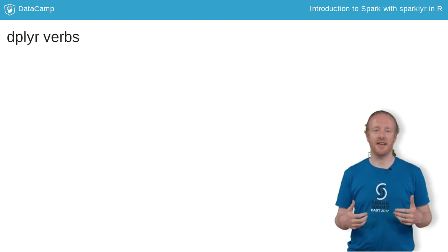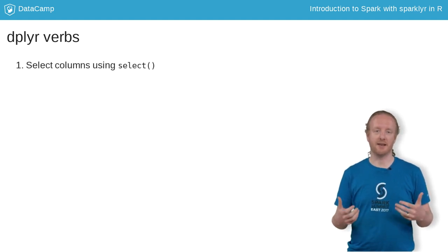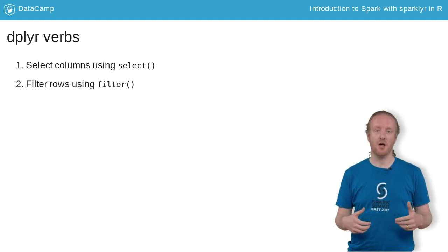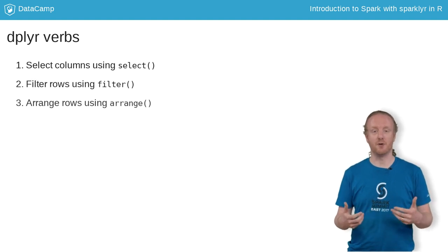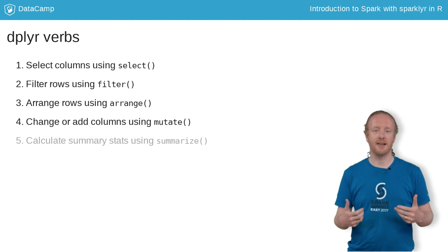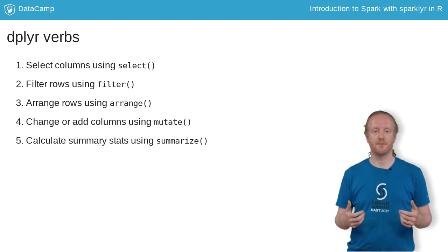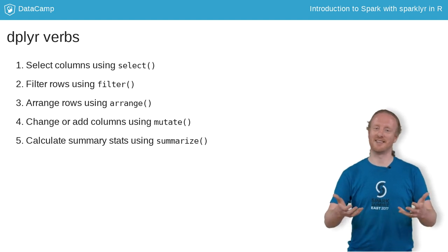dplyr provides a grammar of data transformation. There are five main transformations that you can apply to a dataset: you can select columns, filter rows, arrange the order of rows, change columns or add new columns, and calculate summary statistics. These transformations work on local data frames and on Spark data frames. Don't be afraid of the problems — I'll see you in the course.